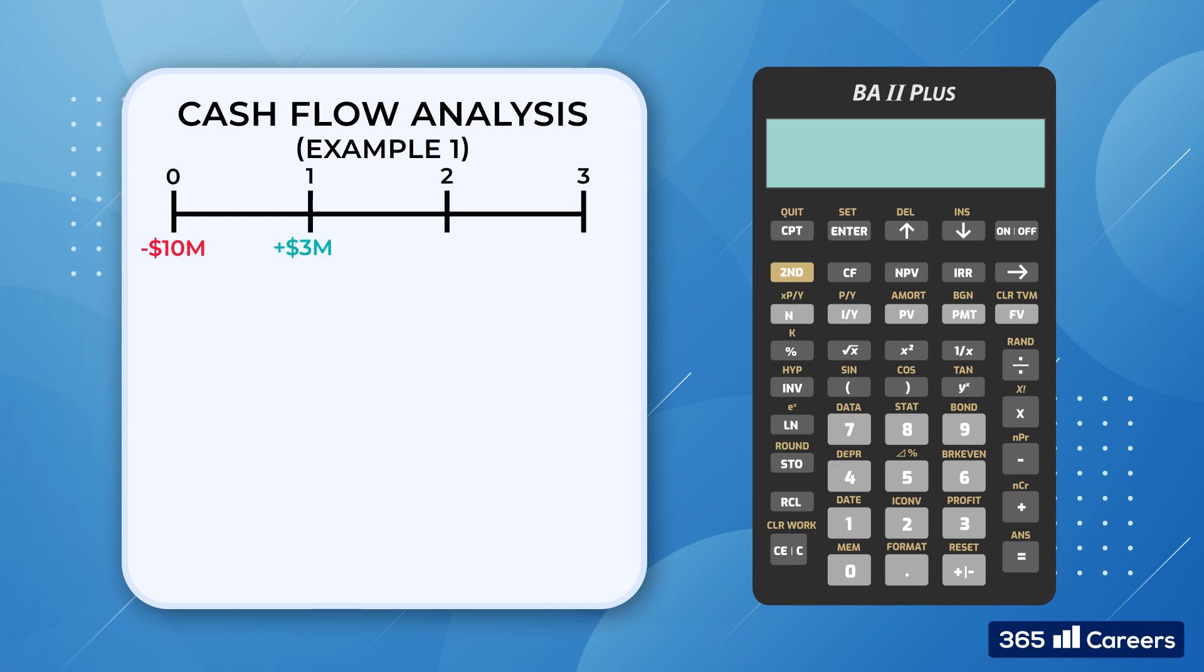A project requires a $10 million investment and generates three subsequent cash inflows: $3 million in the first year, $4.5 million in the second, and $5 million in the third year, as shown on the following timeline. The discount rate we would use is 10%, and we would like to know whether the project will be a profitable endeavor by determining its net present value and internal rate of return.